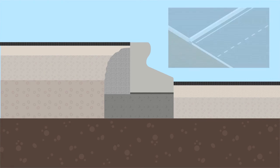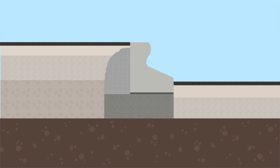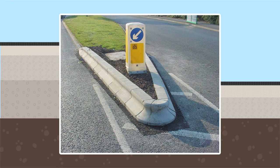Transition kerbs are available to allow TRIEF kerbs to connect to British Standard HB2 kerbs. Various components, such as quadrants, are available to enable the designer to achieve their kerb layout.